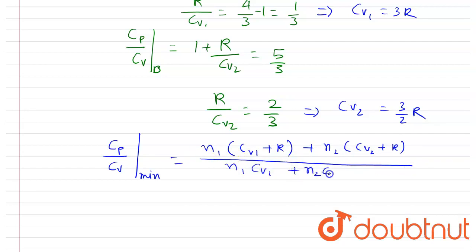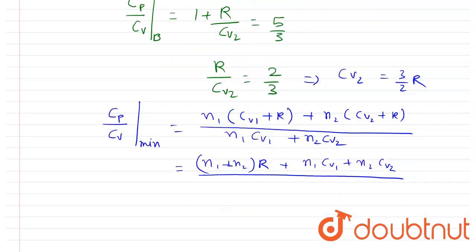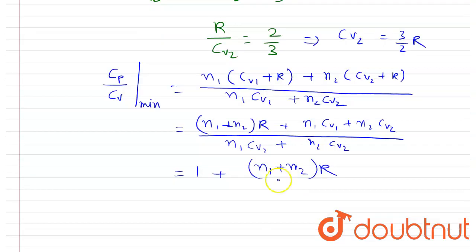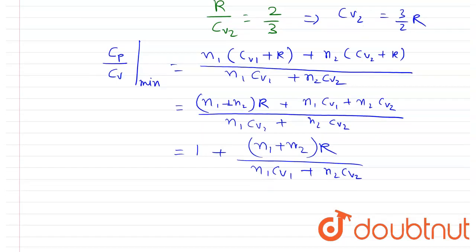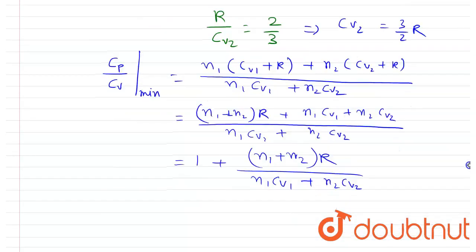Taking R common from the numerator, we get (n1 + n2)·R + (n1·cv1 + n2·cv2) divided by (n1·cv1 + n2·cv2), which simplifies to 1 + (n1 + n2)·R / (n1·cv1 + n2·cv2). Now substituting n1 = 3, n2 = 2, cv1 = 3R, cv2 = 3R/2.